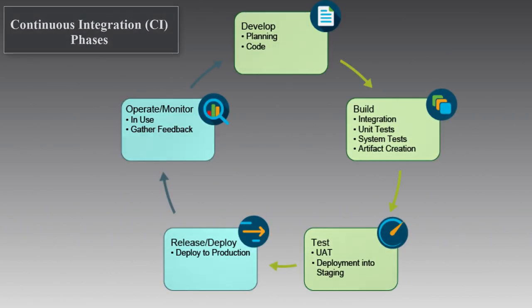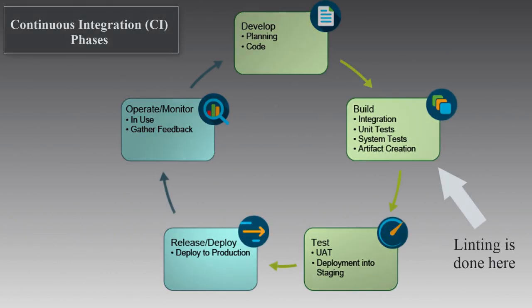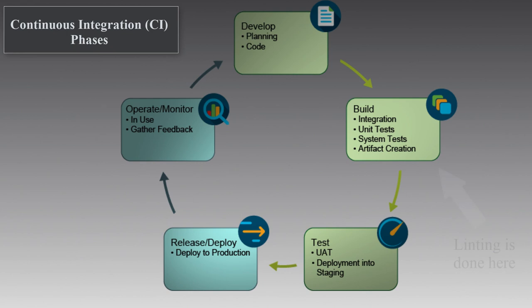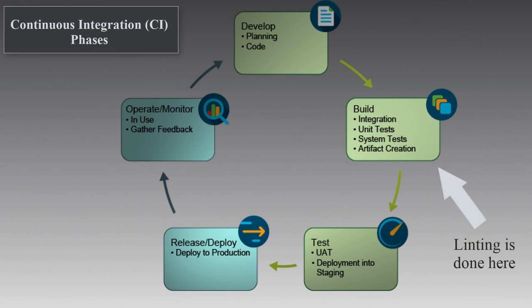Although linting can be considered a type of test, it occurs in the build phase of continuous integration, not the test phase. You should not only perform linting before the test phase, but also before any code reviews. You don't want the team wasting time correcting things which could have been caught with automation.